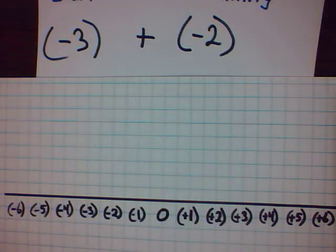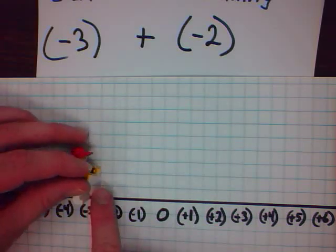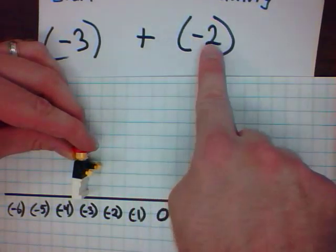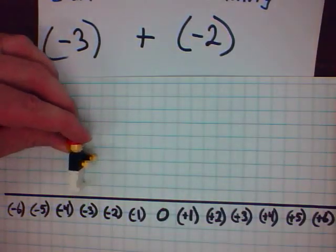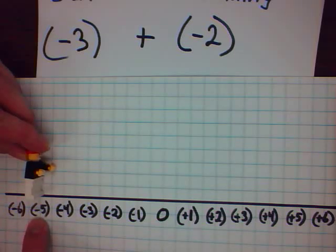So, our little guy is going to start at negative three. He's going to face the positive numbers. Then, he's going to take, he's facing the positive numbers, he takes two steps backwards. So, it's one, two. The answer to this question is negative five.